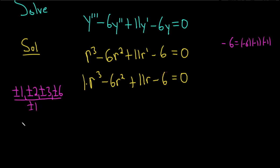So always put a plus or minus over the factors of 1, plus or minus 1. So 1 over 1 is 1, 2 over 1 is 2, 3 over 1 is 3, and then 6 over 1 is 6. These are the possible rational roots.